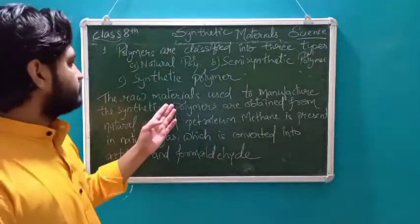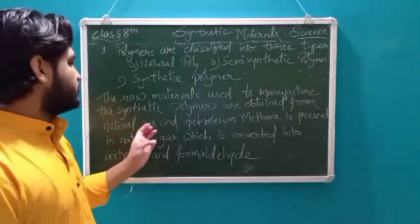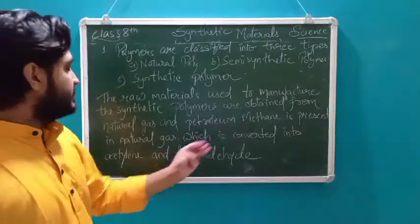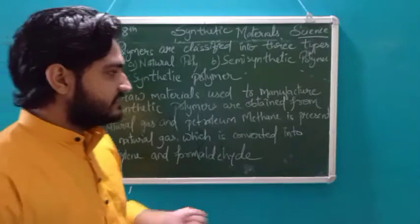Now, the raw materials used to manufacture synthetic polymers are obtained from natural gas and petroleum. Methane is present in natural gas which is converted into acetylene and formaldehyde.